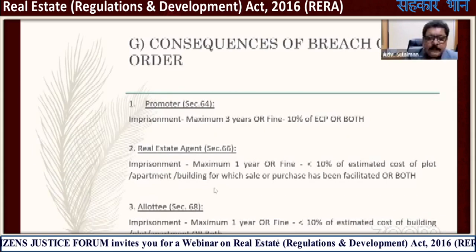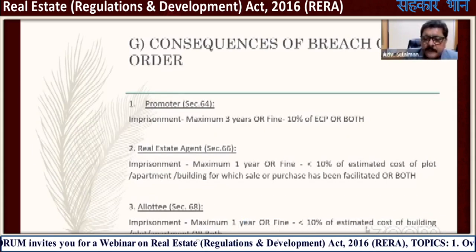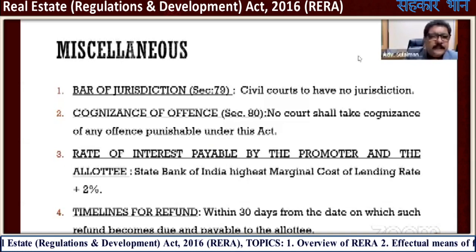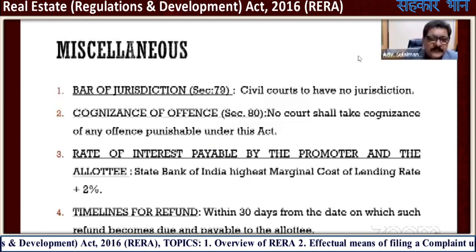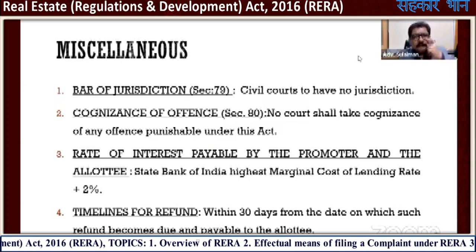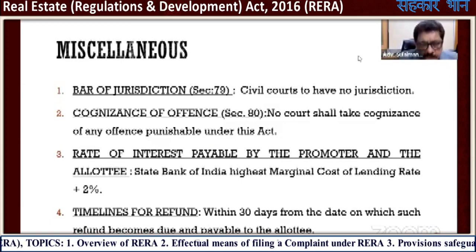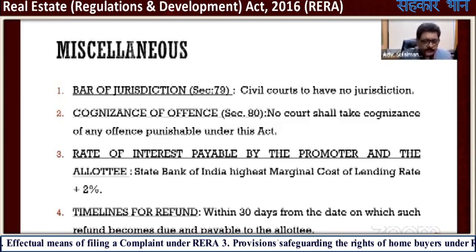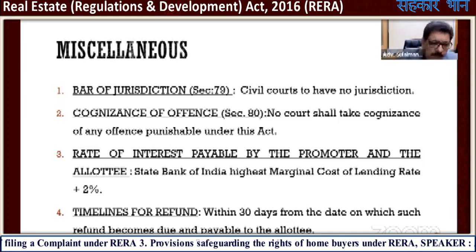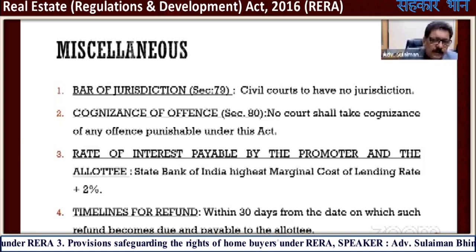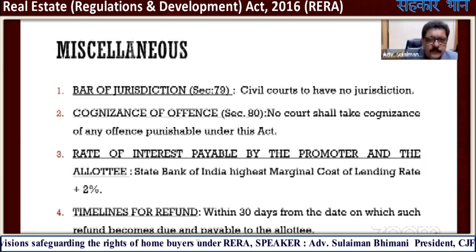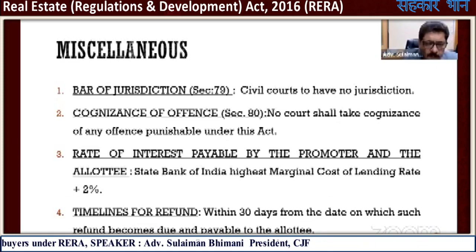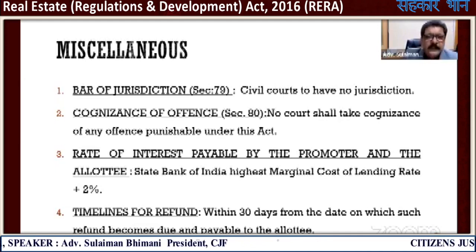Section 68: imprisonment maximum one year, or fine up to 10% of the estimated cost of building or the project, or both. Miscellaneous — Bar of jurisdiction: as per Section 79, civil courts have no jurisdiction. If you have a dispute between the builder and you as a home buyer, you cannot go to the city civil court or directly to the High Court. You have to go to RERA first, then the appellate tribunal if unsatisfied, and only then to the High Court.